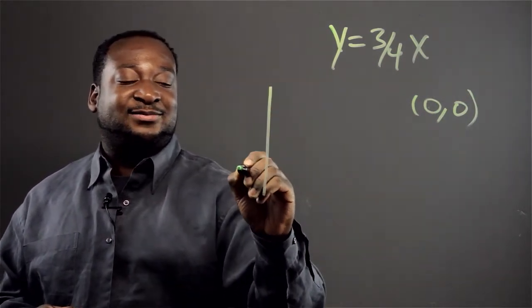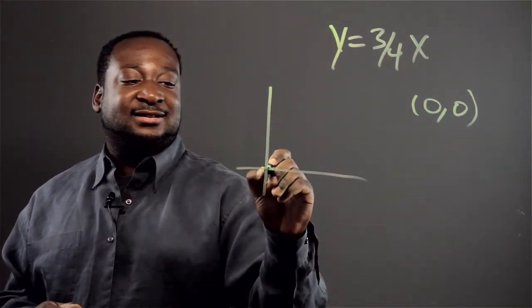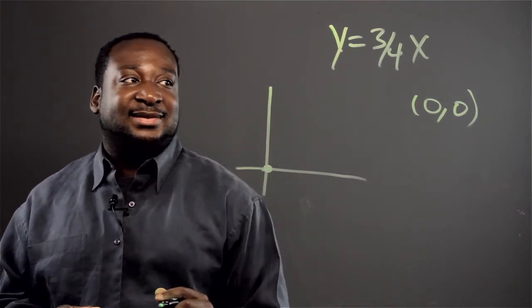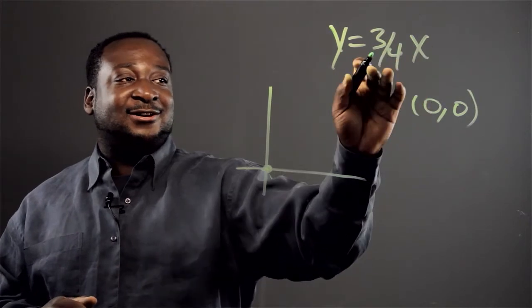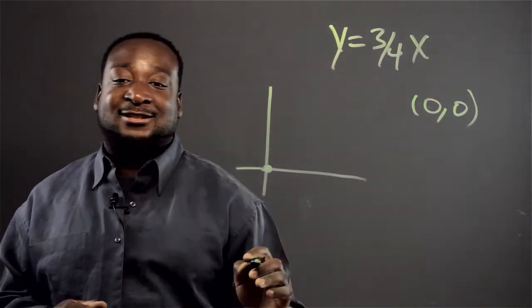So when I plot that point, the first point is right there. And the number that is next to the x, or the coefficient to the x, that's our slope.